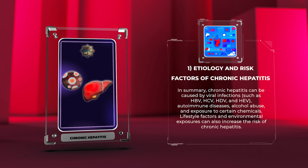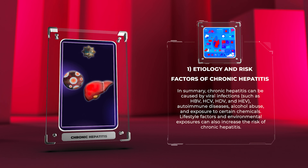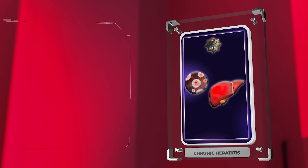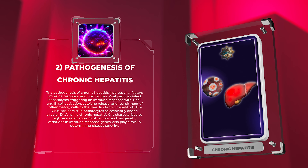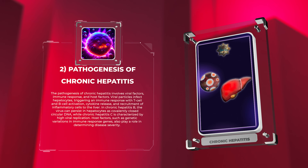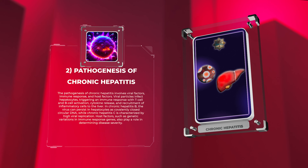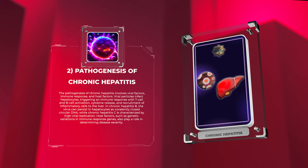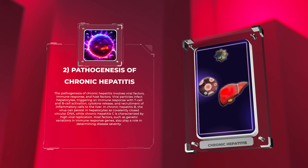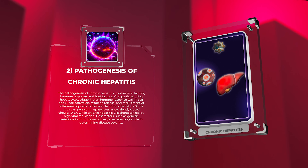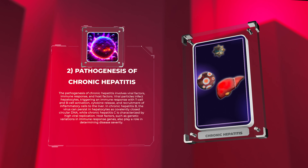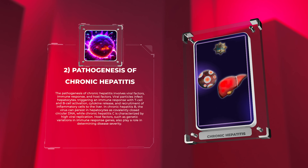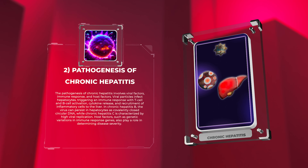The pathogenesis of chronic hepatitis involves viral factors, immune response, and host factors. Viral particles infect hepatocytes, triggering an immune response with T-cell and B-cell activation, cytokine release, and recruitment of inflammatory cells to the liver. In chronic hepatitis B, the virus can persist in hepatocytes as covalently closed circular DNA, while chronic hepatitis C is characterized by high viral replication. Host factors such as genetic variations in immune response genes also play a role in determining disease severity.